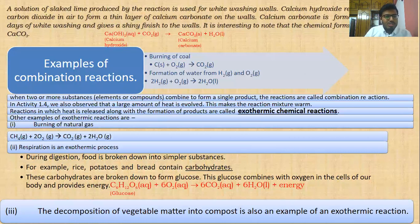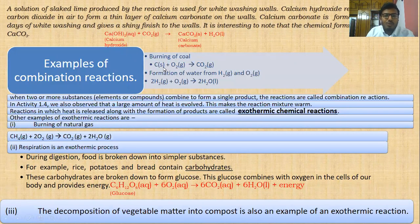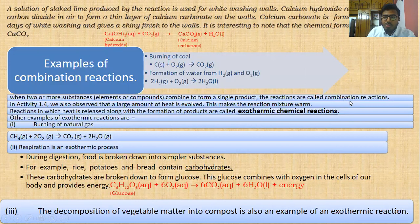Now let's look at some examples of combination reactions: two reactants combine to form one product. First, burning of coal — coal is mainly carbon. Carbon combined with oxygen gives carbon dioxide. Second, combining hydrogen and oxygen gives water. When two or more substances combine to form a single product, the reactions are called combination reactions.